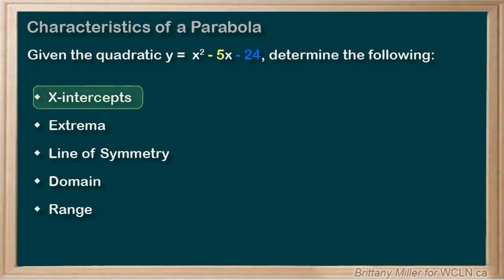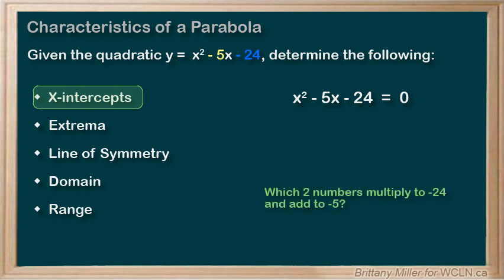The x-intercepts are the solutions to x² - 5x - 24 = 0. You could use factoring or the quadratic formula to find them. This equation will factor, so that's what I'm going to do. What are two numbers that multiply to -24 and add to -5? Well, it's -8 and 3, so our x-intercepts will be x equals 8 and x equals -3.